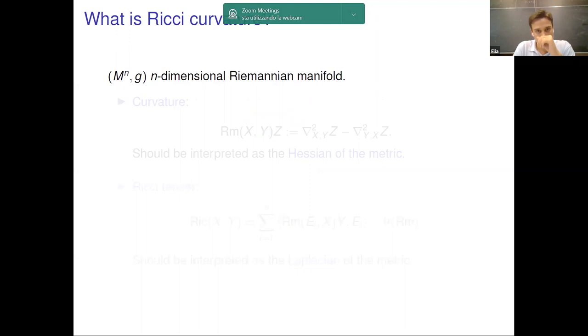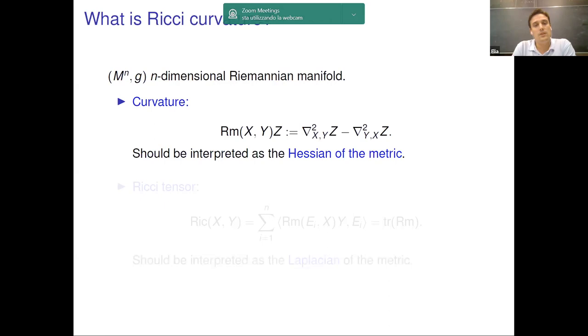Let me start by briefly recalling the standard notion of curvature given a Riemannian manifold of dimension n. The curvature tensor is given by the following complicated fourth order tensor, which involves two derivatives and takes two vector fields and gives back one vector field. In the flat Euclidean space, this object is identically equal to zero. A right way to interpret this object is as the Hessian of the metric. This is just a moral interpretation because the actual Hessian of the metric is equal to zero basically by definition.